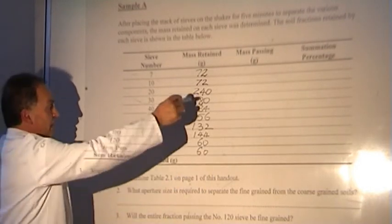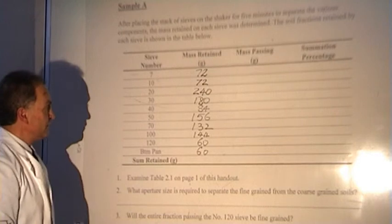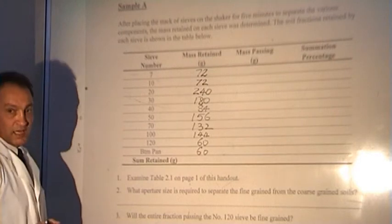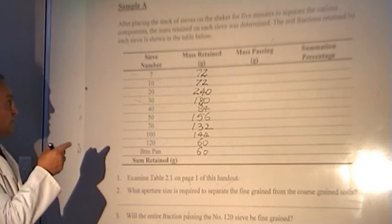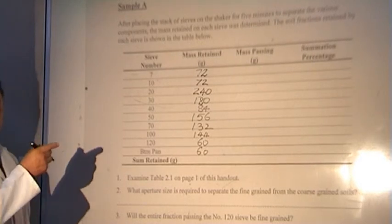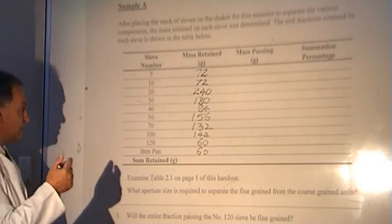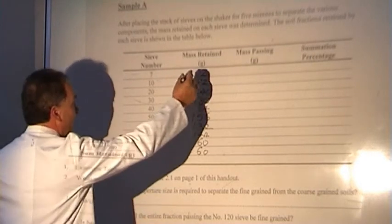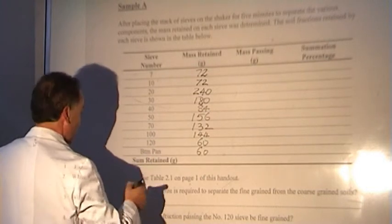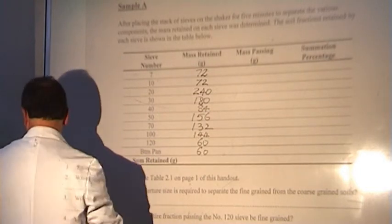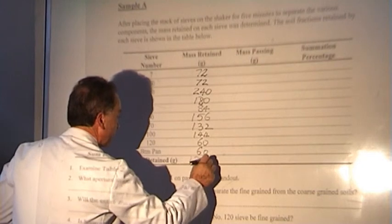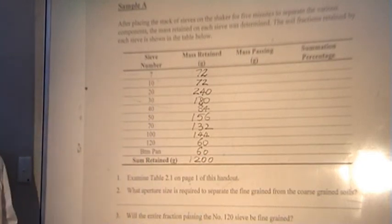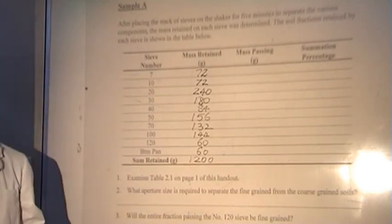Adding all of these values allows us to check whether the retained mass matches the starting mass. The total is 1200 grams, which means losses are negligible.